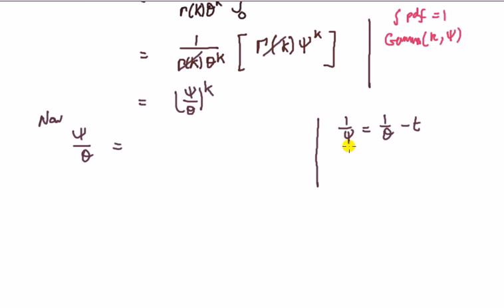Now I'm just going to arrange to get phi up in the numerator. So writing this is the same as writing 1 minus theta t over phi, therefore phi is equal to theta over 1 minus theta t.